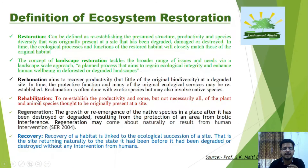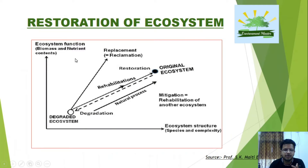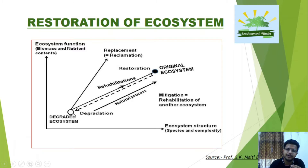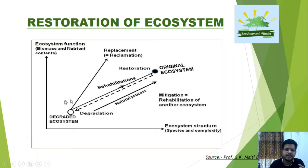Concepts include reclamation, rehabilitation, regeneration, and recovery. On a graph with ecosystem functions (biomass and nutrient content) on the Y-axis and ecosystem structure (species and complexity) on the X-axis, we can see the degraded ecosystem versus the original ecosystem. The journey of degradation goes from the original ecosystem to the degraded ecosystem through various anthropogenic and natural activities like mining, tsunamis, and other catastrophic events.